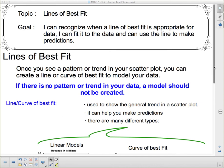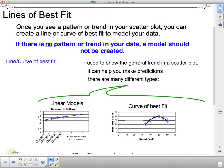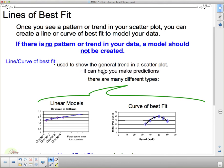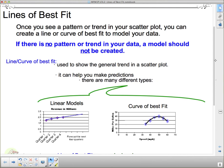So here, line or curve of best fit. A line or curve of best fit is used to show the general trend in a scatter plot. It can help you make predictions, and there are many different types.